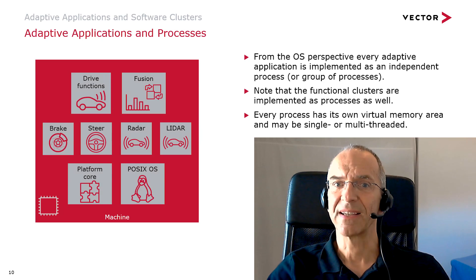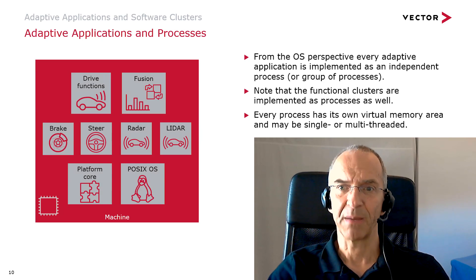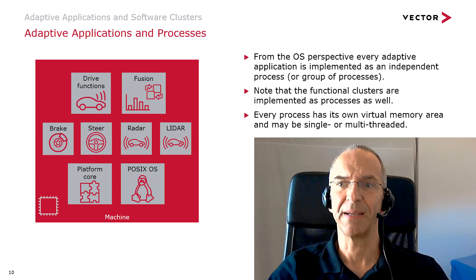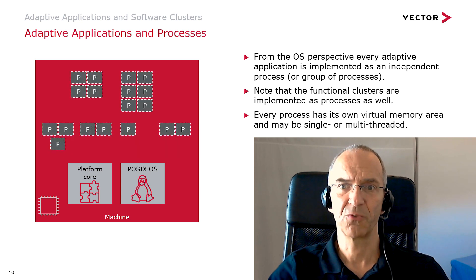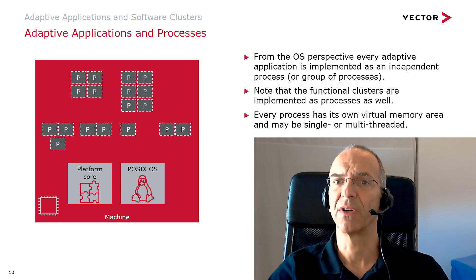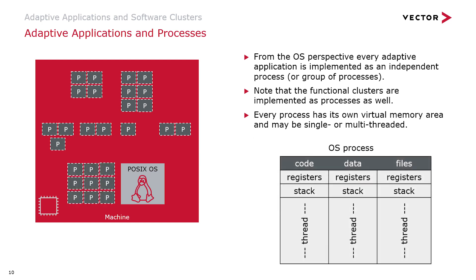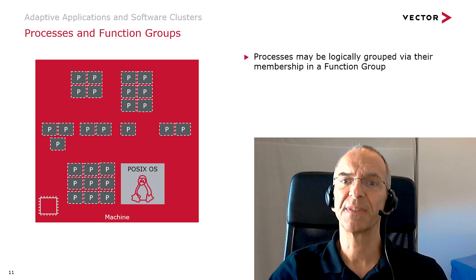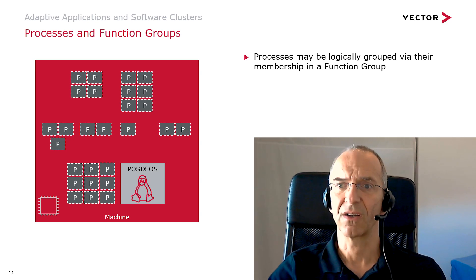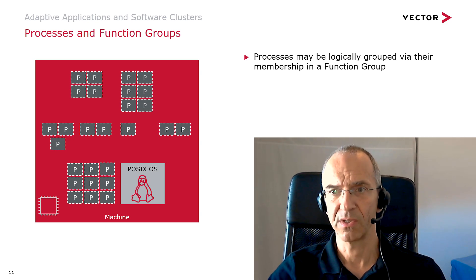Back to our example, we see that adaptive applications and functional clusters follow the same concept. In the end, they are all processes which must interact via operating system specific mechanisms. In order to keep them logically together, the concept of a function group was introduced.